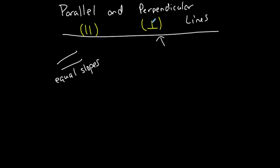Perpendicular lines do intersect, but they intersect specifically at 90 degrees. Perpendicular means 90 degrees — perpendicular angles are 90-degree angles. So perpendicular lines are lines that intersect at 90 degrees. If they're not intersecting at 90 degrees, they're not perpendicular. These have opposite reciprocal slopes.